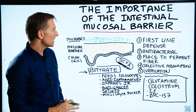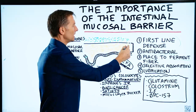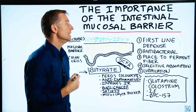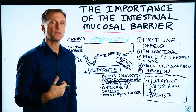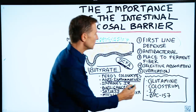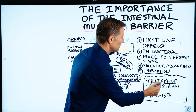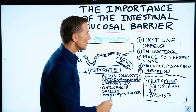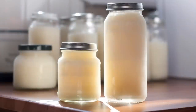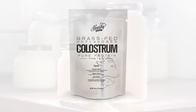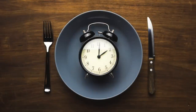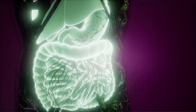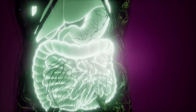There are a couple of things you can do to help heal this barrier in addition to consuming vegetables. One would be to take glutamine — glutamine helps maintain this barrier. Colostrum will also help reestablish this barrier; it can be gotten in powder form at the health food store. Intermittent fasting is also very important to help heal the gut and reduce inflammation.